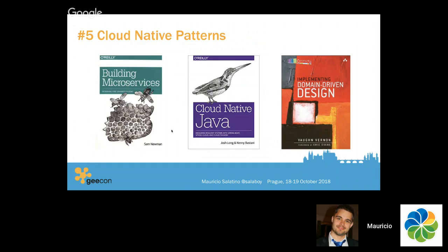When you step back from a single service and look at the entire architecture, you realize you need to start thinking about cloud native patterns. When you're building distributed systems, there are well-documented patterns you can follow in order to not make mistakes. I totally recommend these three books that tackle different angles on how you build distributed systems and cloud native applications. First, Building Microservices from Sam Newman — extremely recommended because Sam describes patterns on how you build these systems and high-level techniques on how you architect them and how different pieces interact.